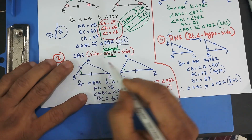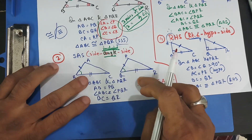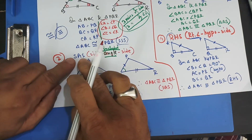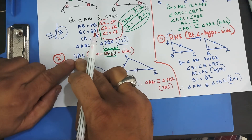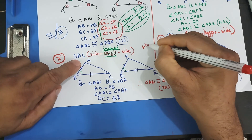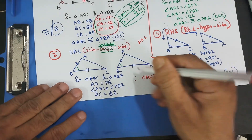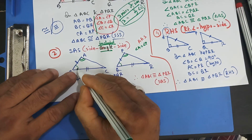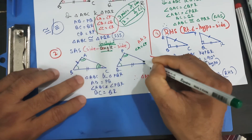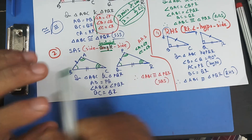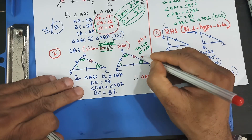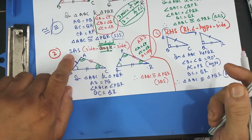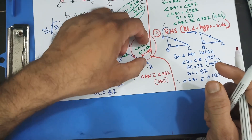For the SAS case, we used two pairs of equal sides and one pair of equal angles as given. From that we can derive the other two angles and the remaining side are also equal. So angle A equals angle P, angle C equals angle R, and AC equals PR.